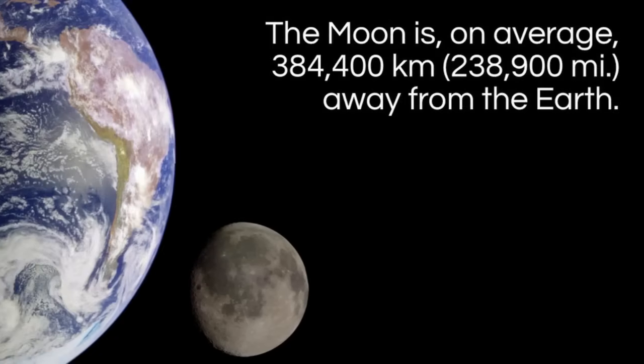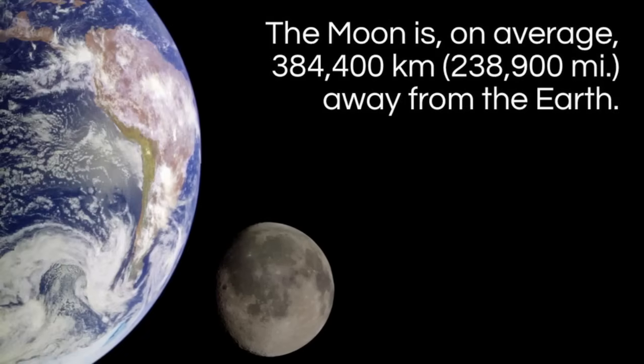The moon is, on average, just under 400,000 kilometers away from the Earth. This is about 240,000 miles. We have to say on average because this distance changes over the course of one moon's orbit around the Earth.